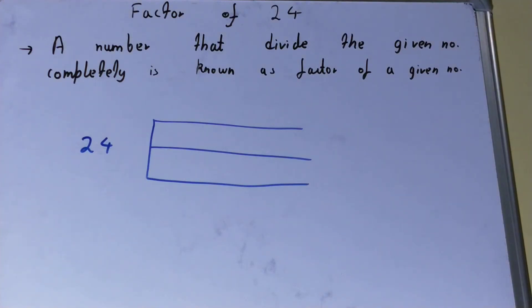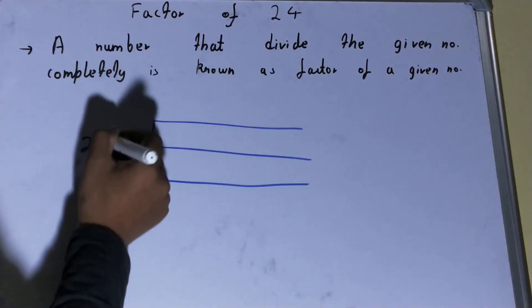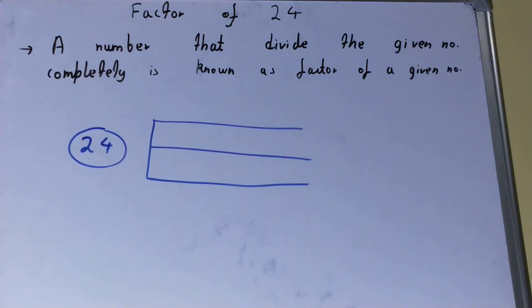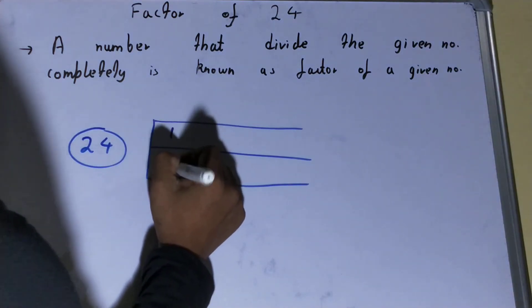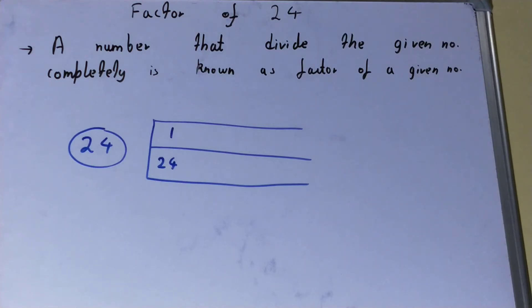If I ask you, given any number whether it is a prime number, composite number, or any other number, what are the two factors that all numbers have? Basically, one and the number itself. Whether it's a prime number or non-prime number, these two factors are common.